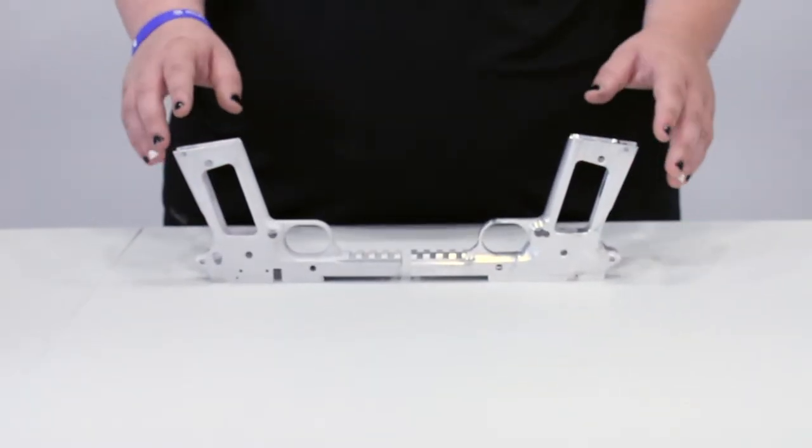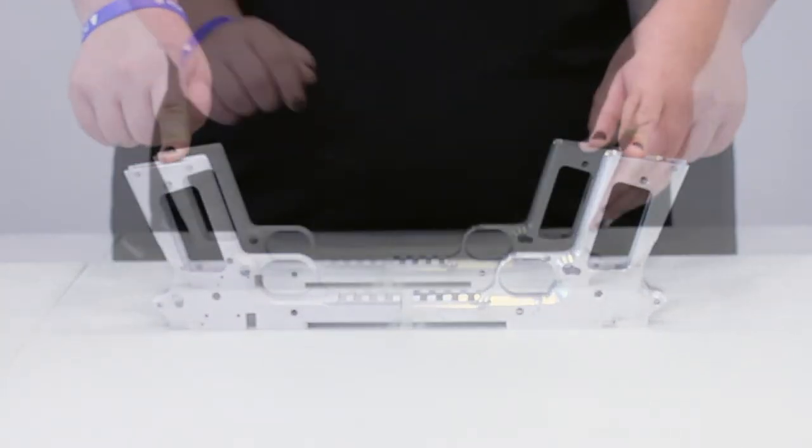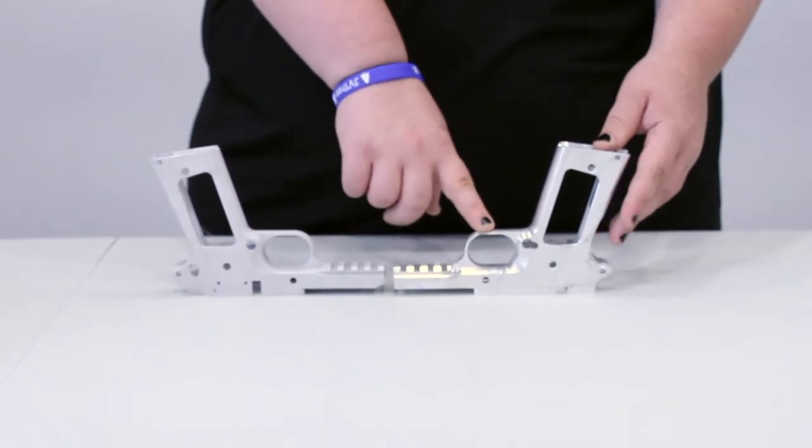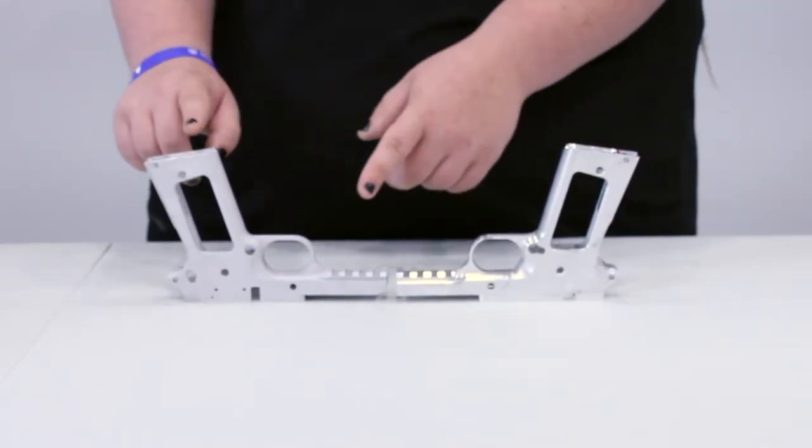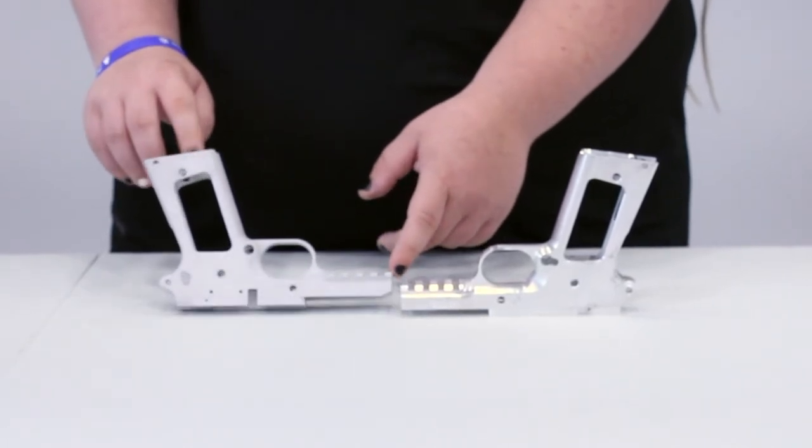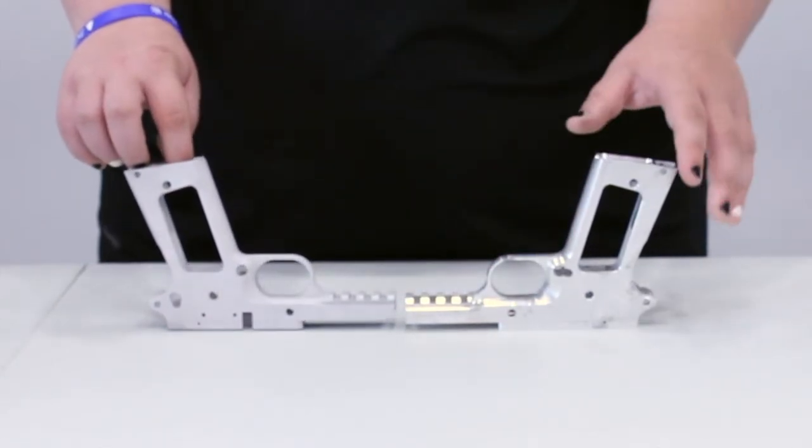So a question that I get a lot is the difference between the raw and the bead-blasted. One is straight off the machine. There's no finish to it, it's just the raw metal. And then this one has been sandblasted, and it's ready for paint, whether that be Cerakote, Duracoat, anodizing, or anything.